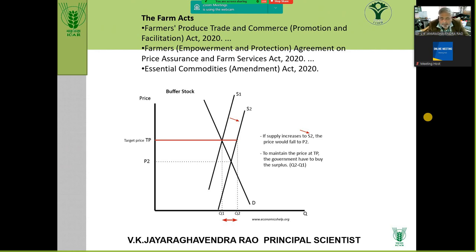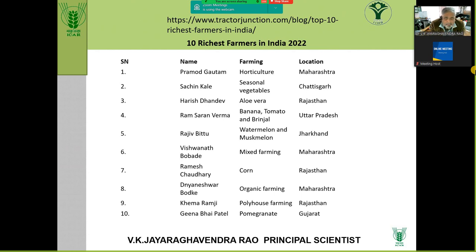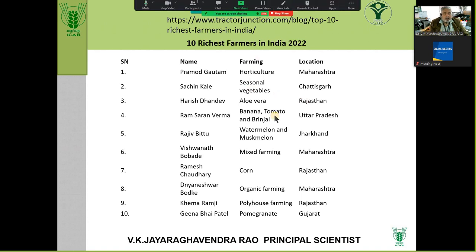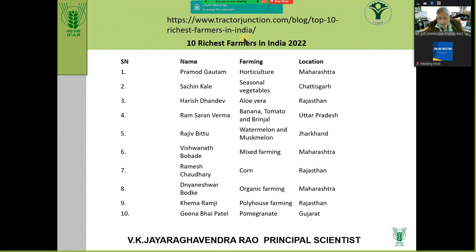To go for protected cultivation and export-oriented farming, you require start-up models and so on. Good or bad, the farm acts have been withdrawn. There are examples of the 10 richest farmers — horticulture, seasonal vegetables, aloe vera, organic corn, polyhouse farming, pomegranate — all moving into protected cultivation and high commercial value farming. Simply by wheat, paddy, and subsistence farming, unless the government supports you, your farming is not going to be remunerative.